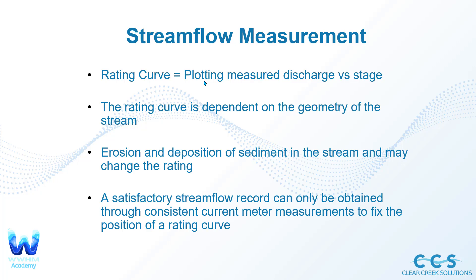A rating curve is a plot of measured discharge versus stage, often using log and arithmetic formulas. The rating curve is dependent on the geometry of the stream, so based on how the stream is set up you're going to get a different rating curve. Erosion and deposition of sediment in the stream may change that rating curve by changing how flow moves and altering the stage of the water. A satisfactory stream flow record can only be obtained through consistent current meter measurements to fix the position of a rating curve and gather enough stage and discharge data based on different storm events.